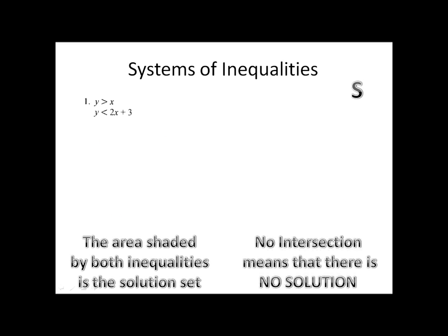In the first example, we have y is greater than x and y is less than 2x plus 3. This is a system of inequalities. There's two or more inequalities with two or more variables.